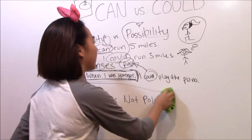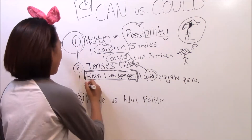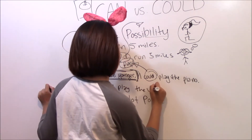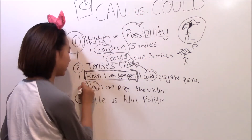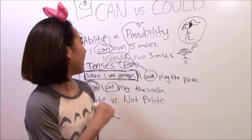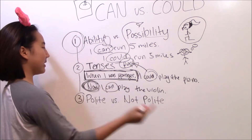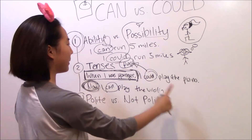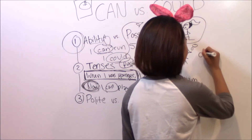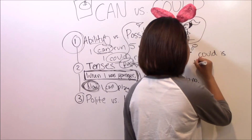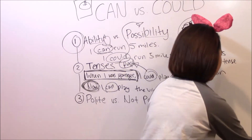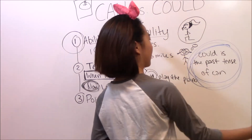But now I can play the violin. 'Now' is another huge hint — that's in the present. So you know that can is in present tense. I can play the violin right now — that is present tense. And 'when I was younger, I could play the piano' — that is past tense. Basically, could is the past tense version of can.